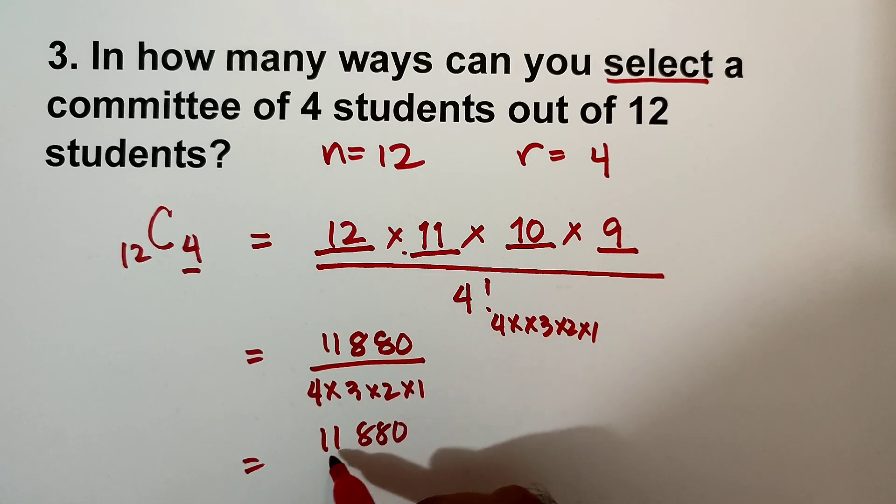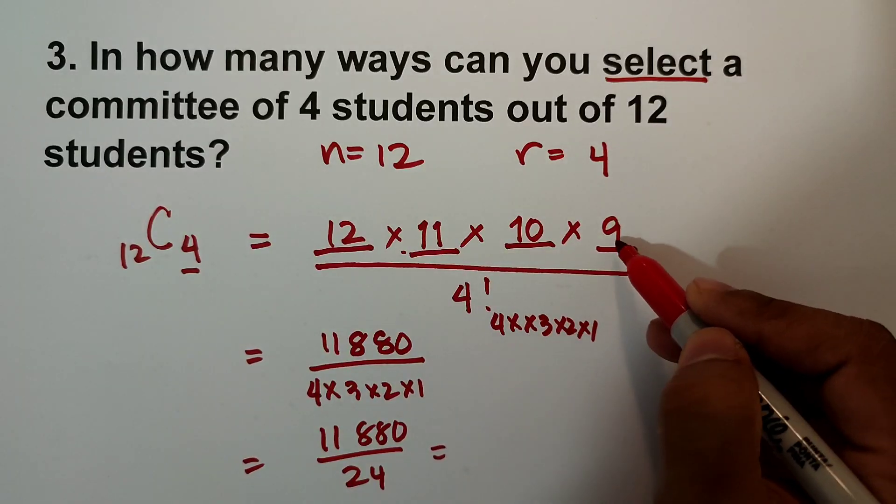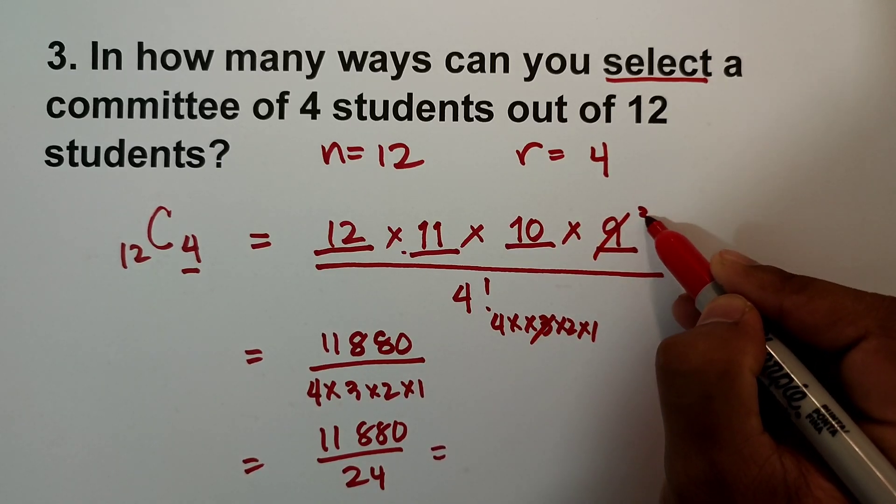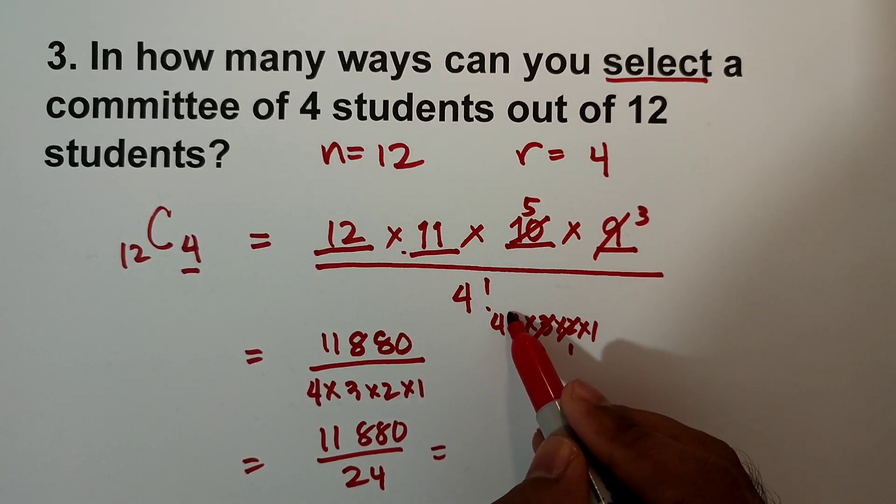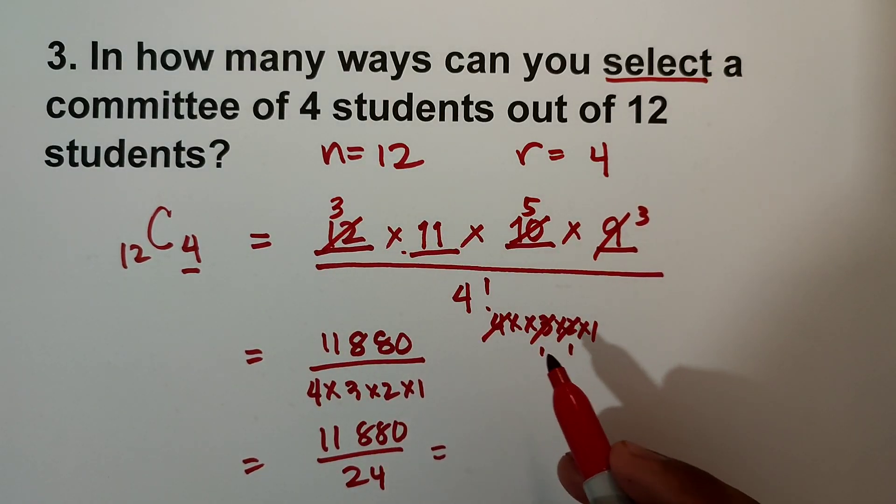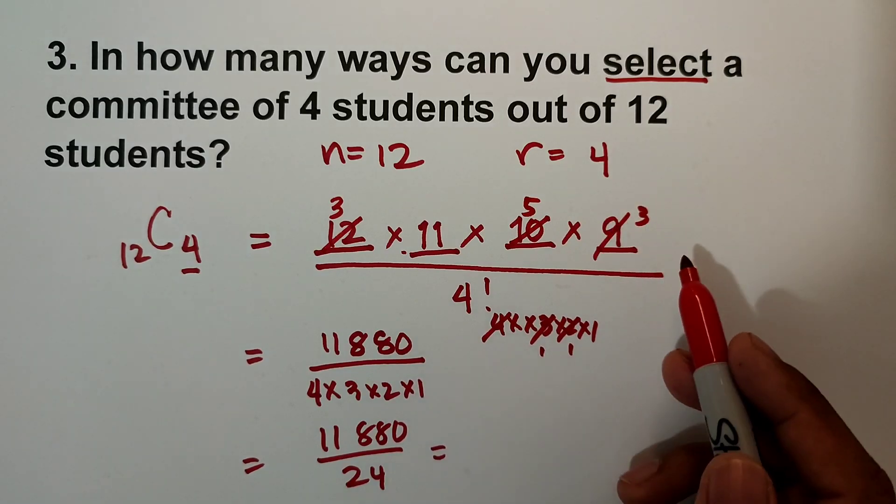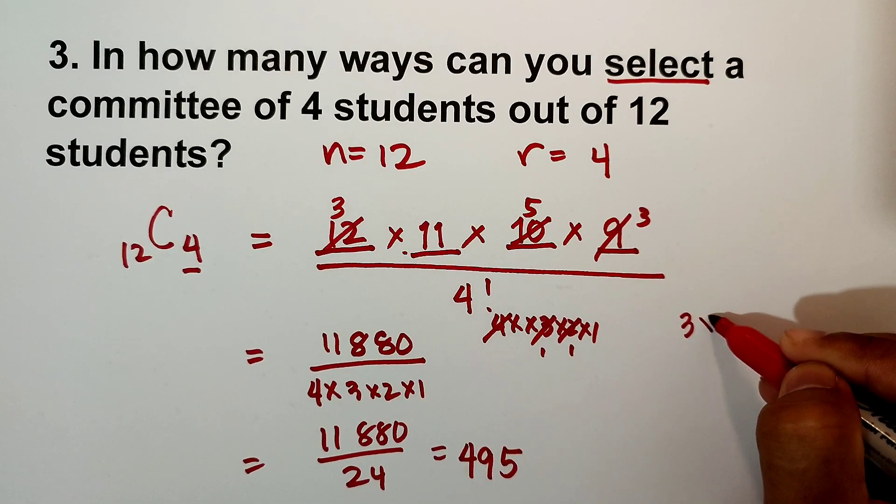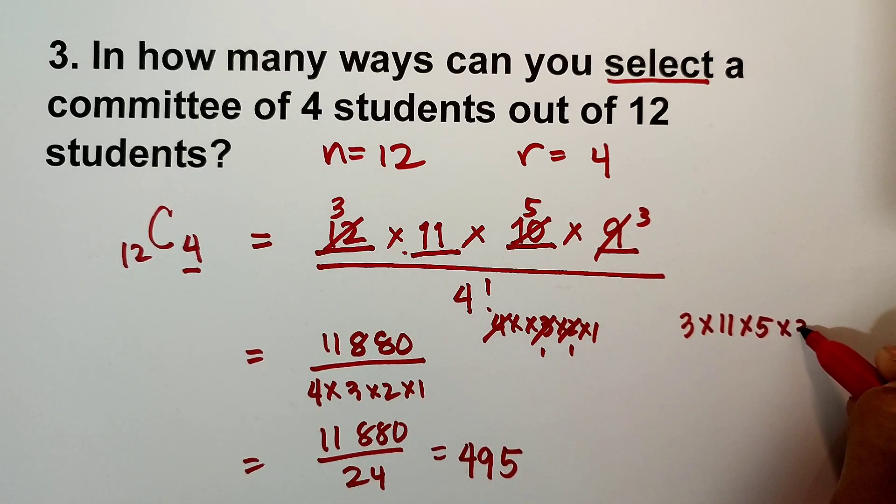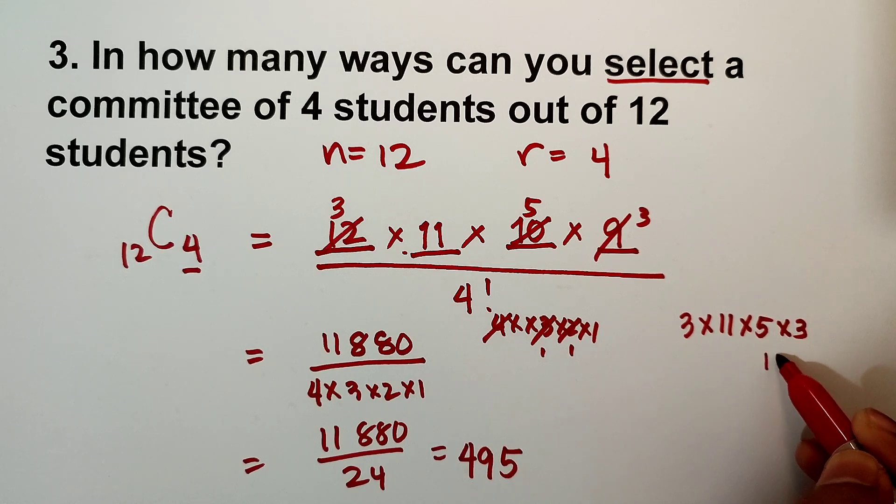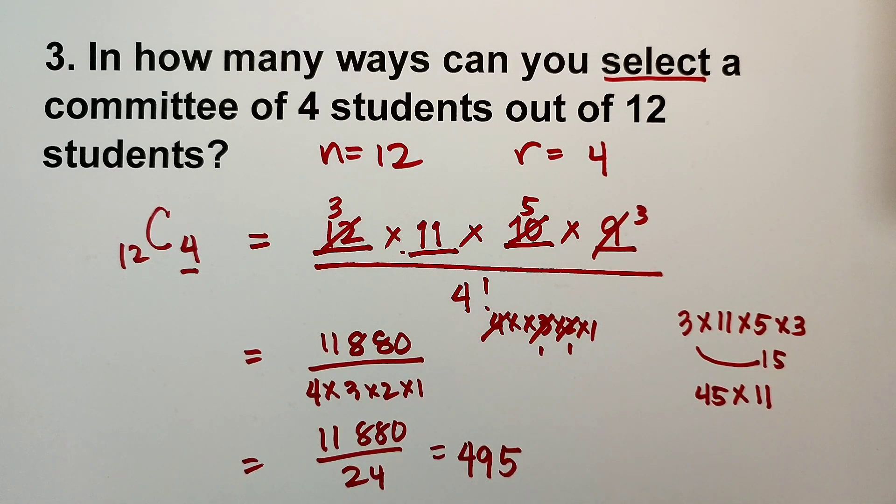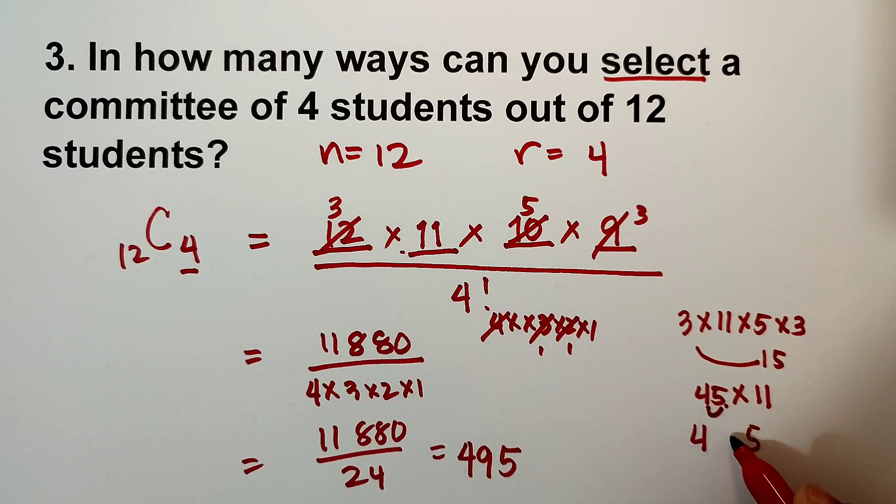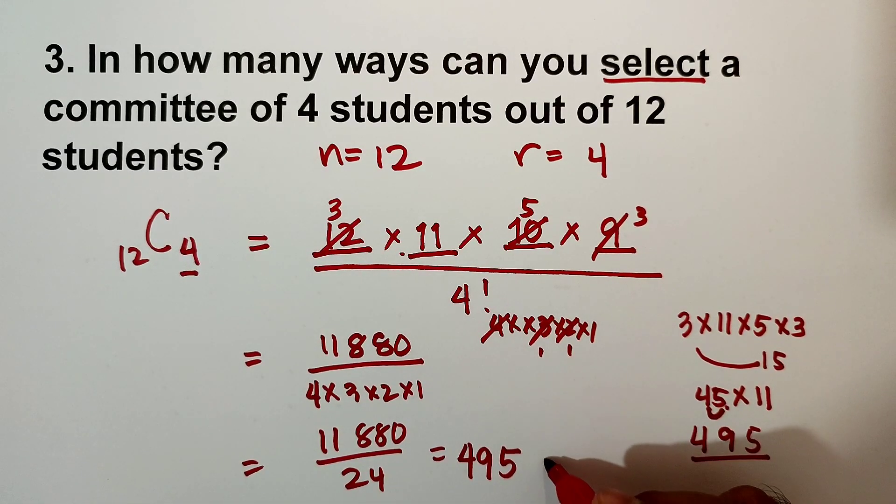So that is 4 times 3 times 2 times 1, that is equal to 24. So 11,880 divided by 24 is 495. But here you can just cancel, like this one: 3 cancels with 3, it becomes 1. Then this 10, cancel, becomes 5. Then the 4 and 12, this can become 3. Okay, so what remains in the numerator is 3 times 5 times 3 times 11, which becomes 3 times 11 times 5 times 3. So 3 times 5 is 15, times 3 is 45, times 11 - 45 times 11, 4 times 1 is 4, 5 times 1 is 5, then 4 plus 5 is 9 - 495.